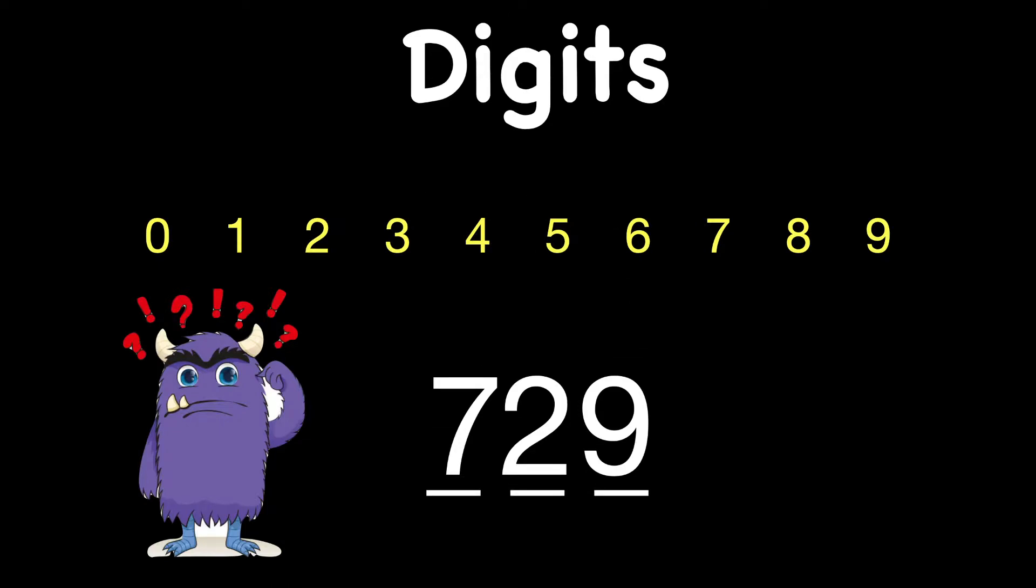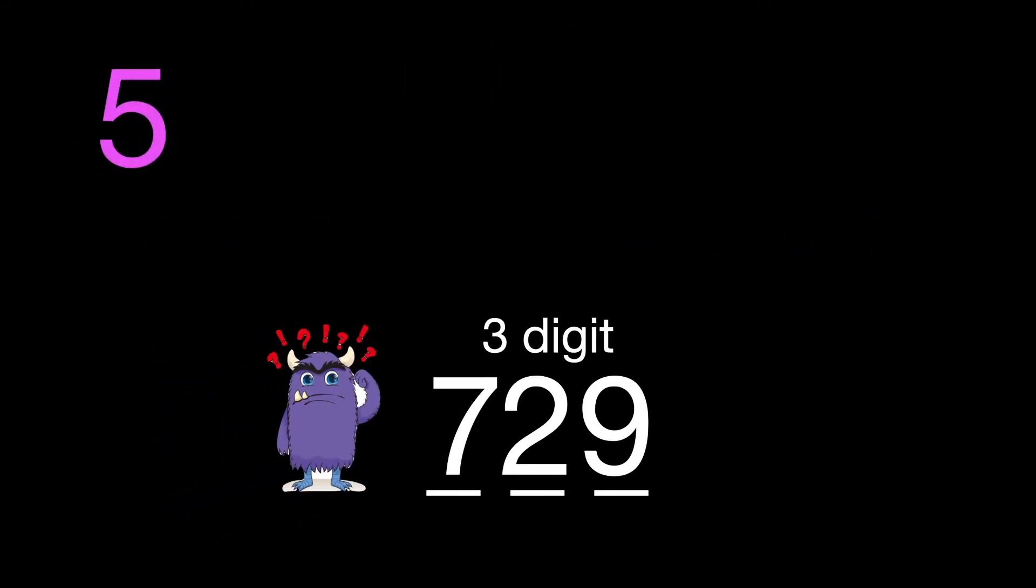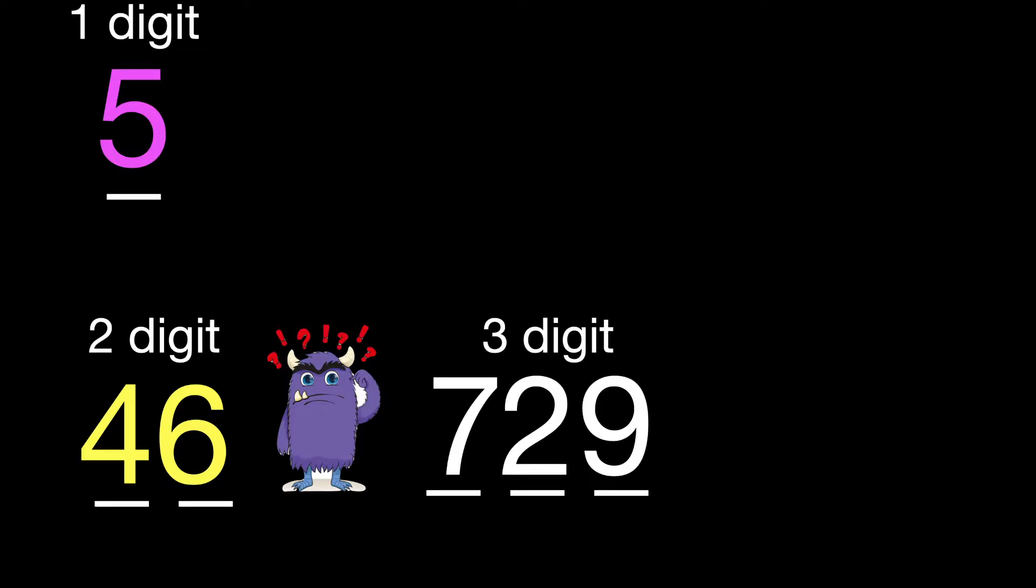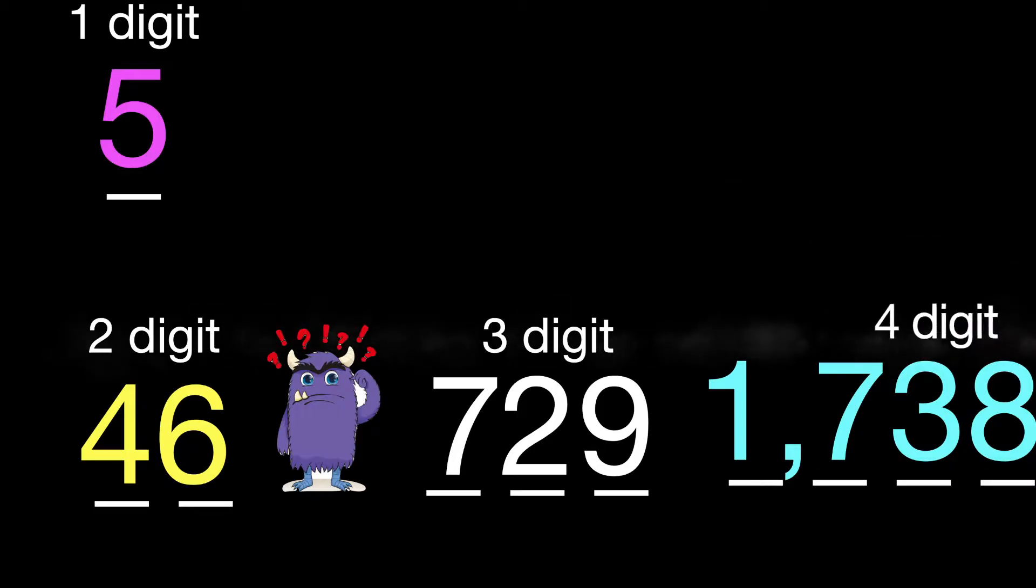So for example, 729 is just three of those digits. Let's look at some other examples. Five would be called a one-digit number because it's just a five. Forty-six would be a two-digit number because four and six are different digits. 1,738, did you guess it? That's a four-digit.